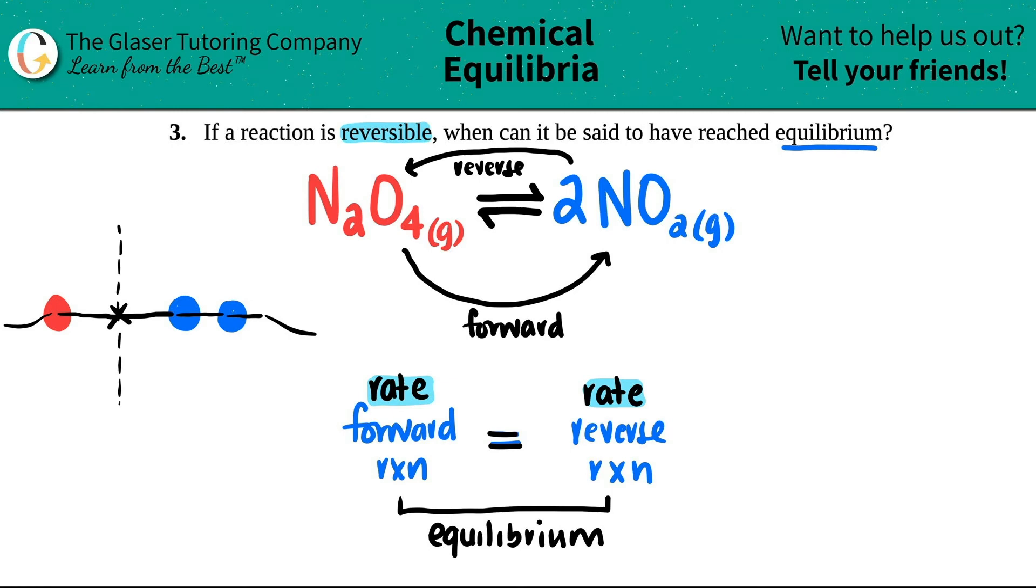They're at equilibrium. They're not going anywhere. The rate in which this is being pulled is the same as this is being pulled, and that's equilibrium.